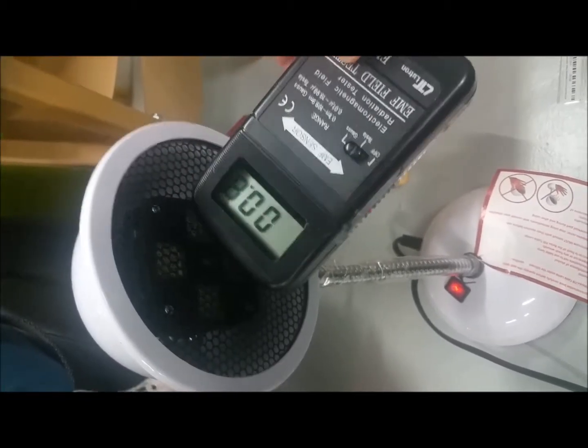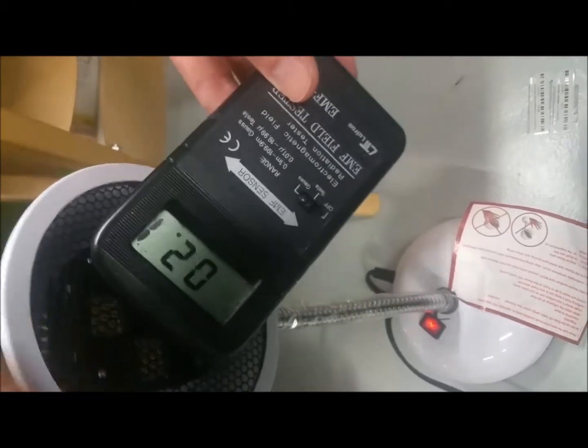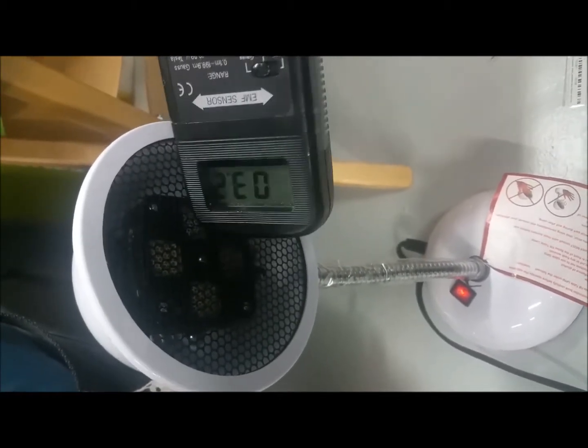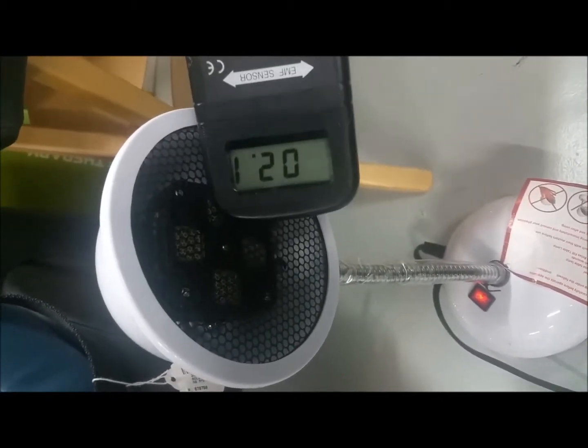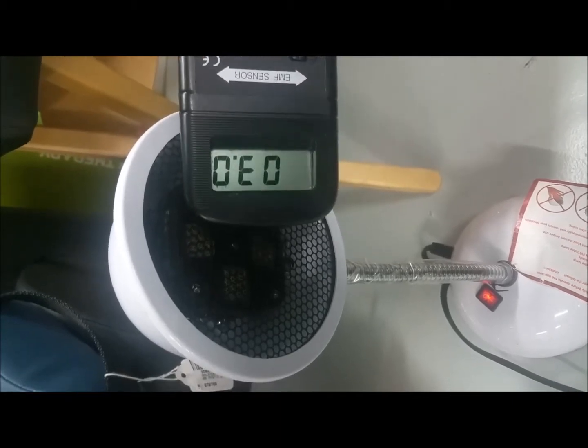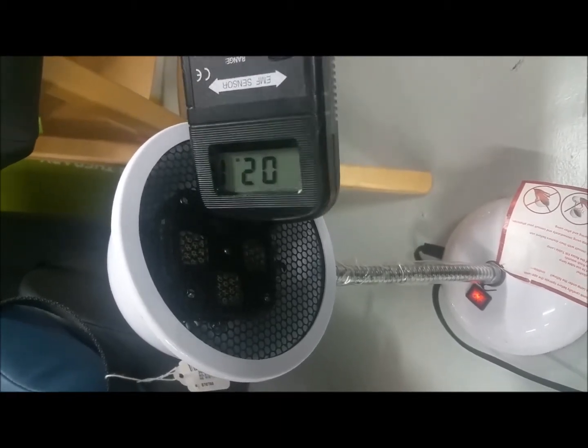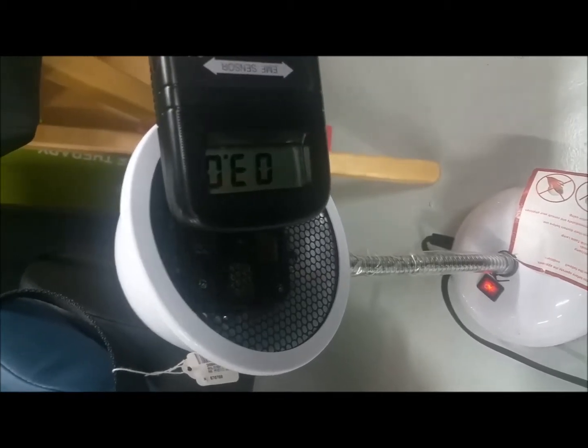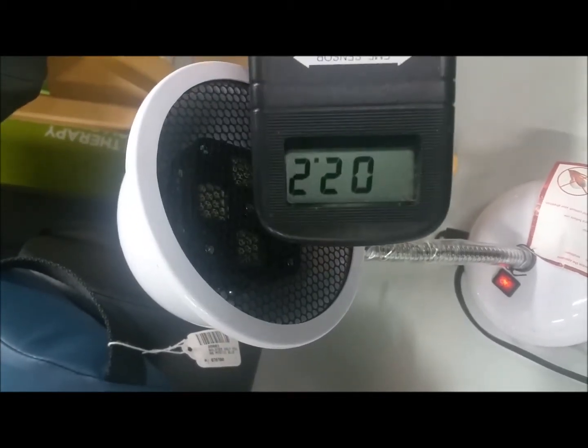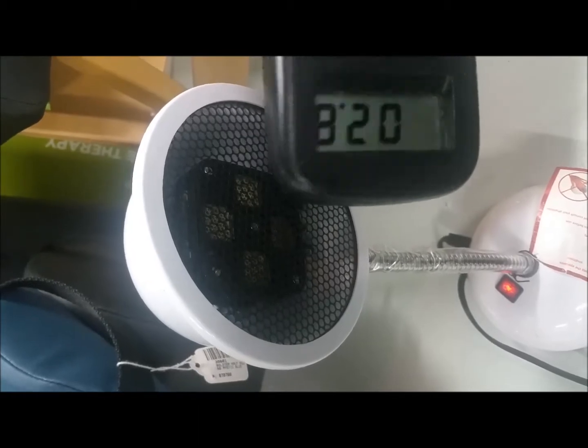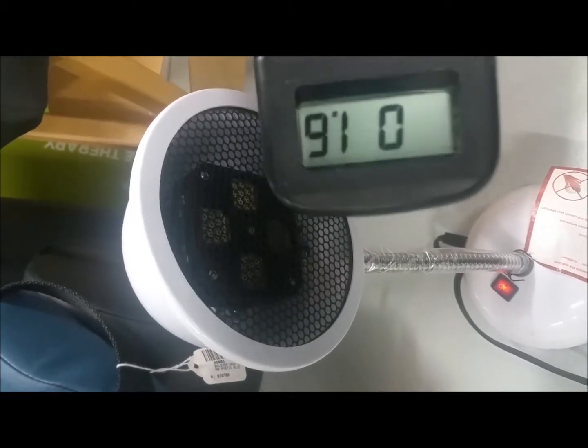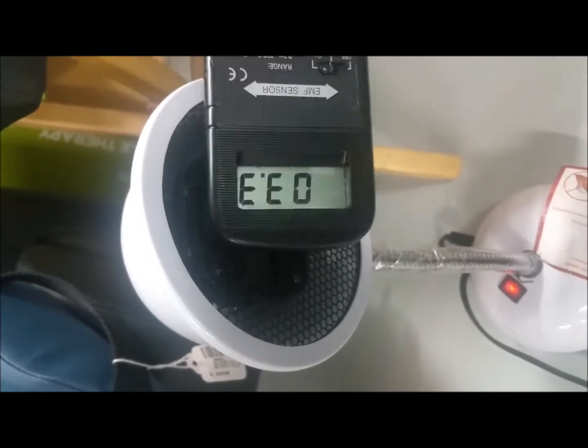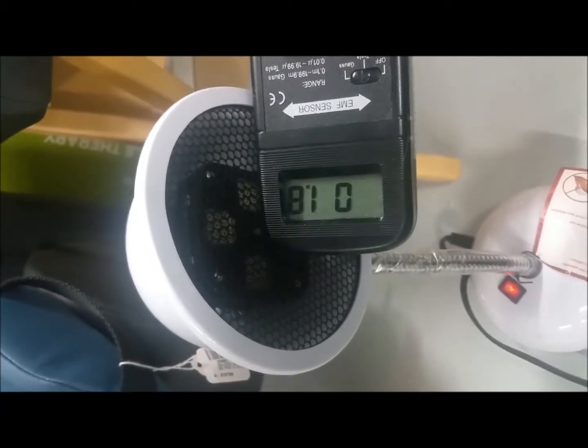This is right in front of the generator of the relaxed far-infrared table lamp. And as you see, the gauss meter fluctuates from 1.2 to 3-something, around 1.0 to 3.0, right in front of the relaxed. It goes from 1.9 and hasn't really gone much above 3.3.